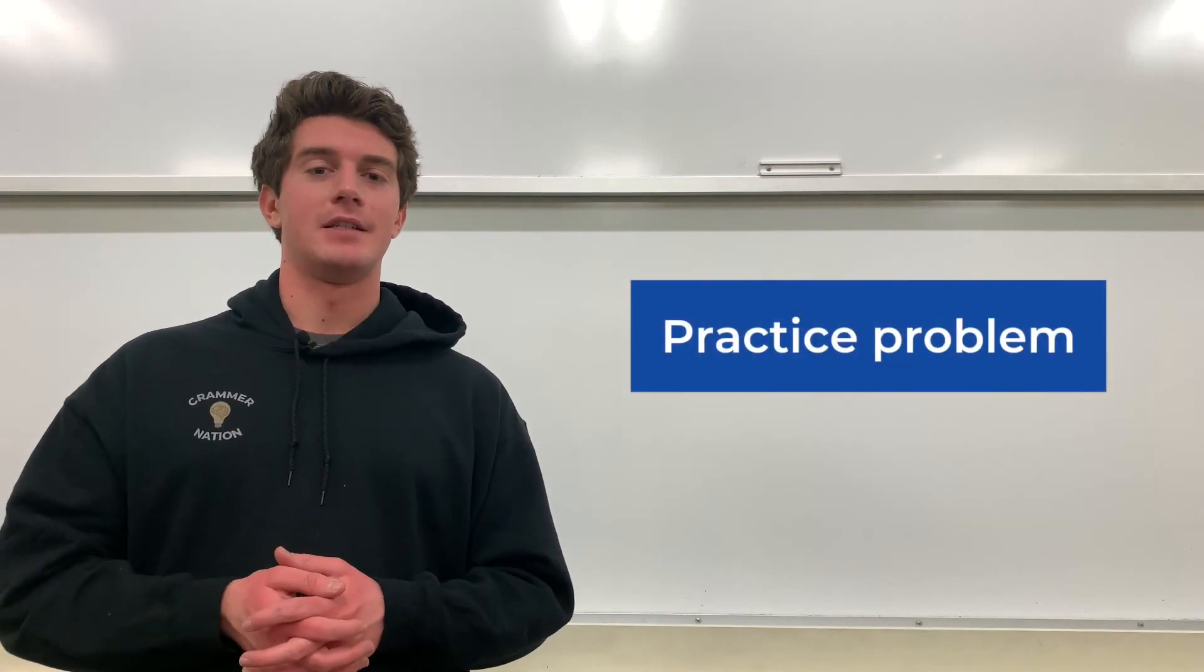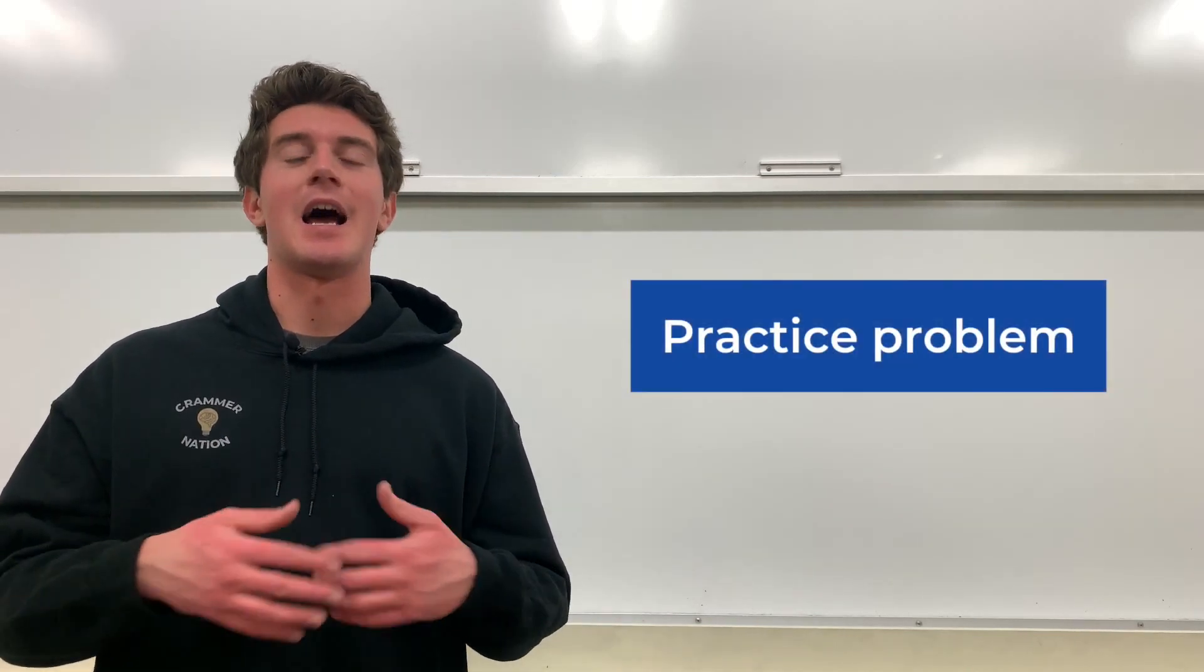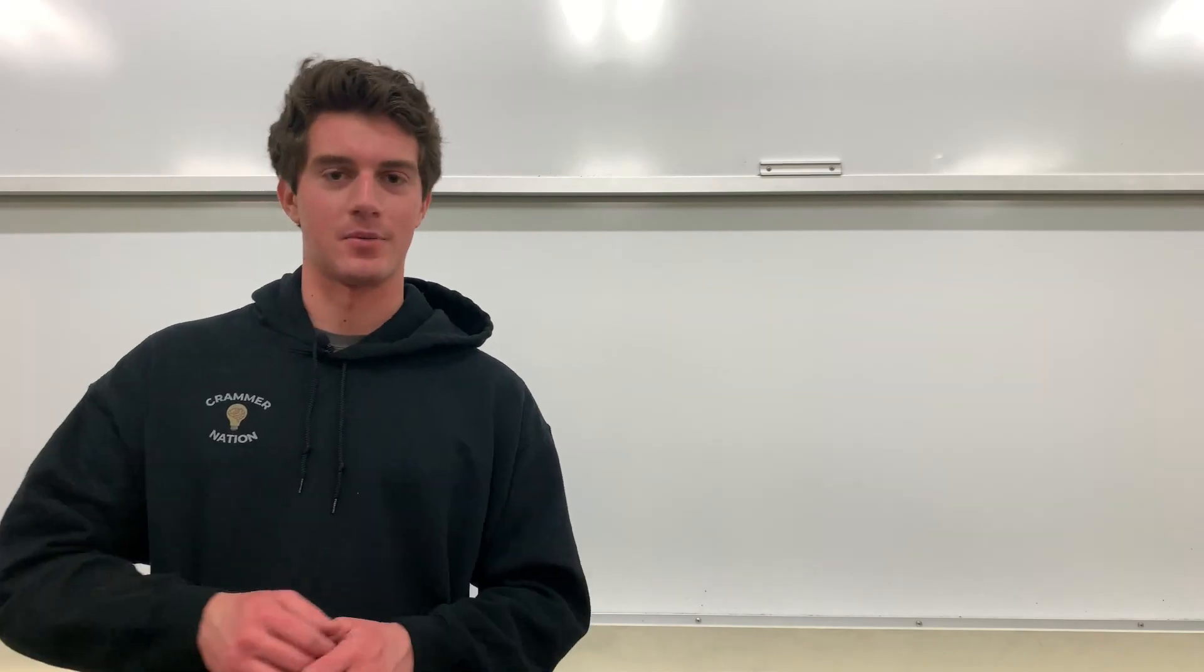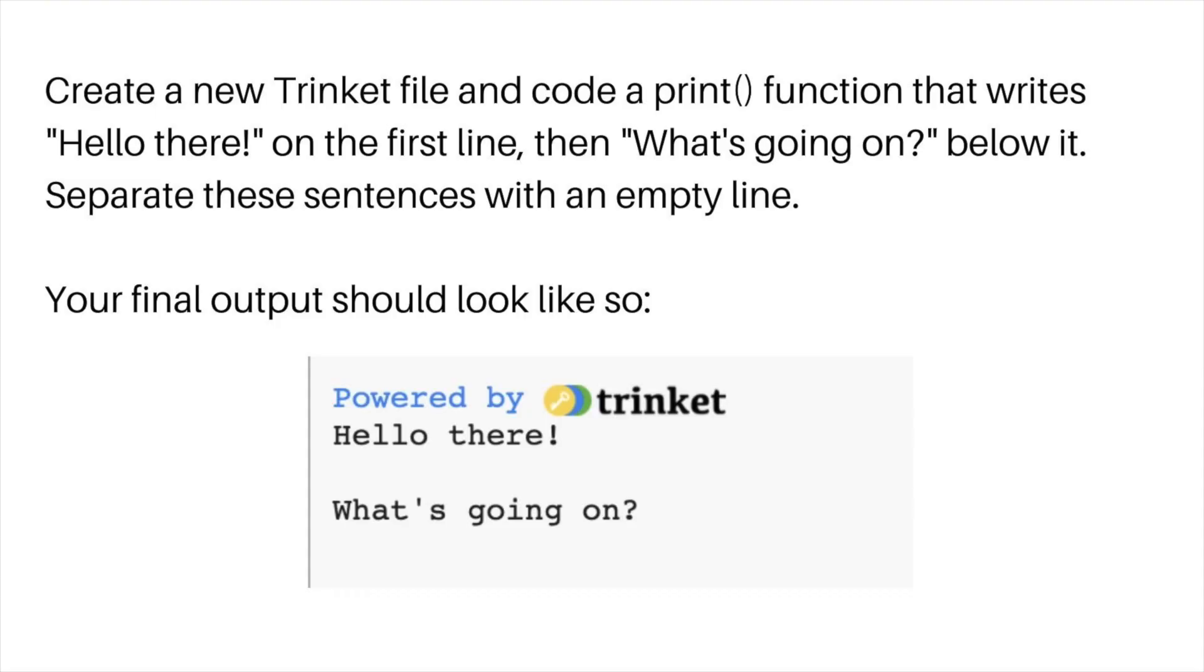All right, now that we have an idea of what the print function is and how we can code it, let's do a little practice problem here. Create a new trinket file and code a print function that writes hello there on the first line, then what's going on below it. Separate these sentences with an empty line. Your final output should look like this.